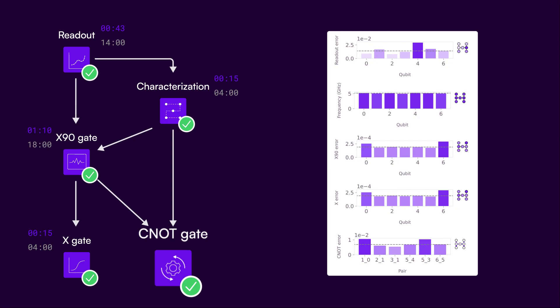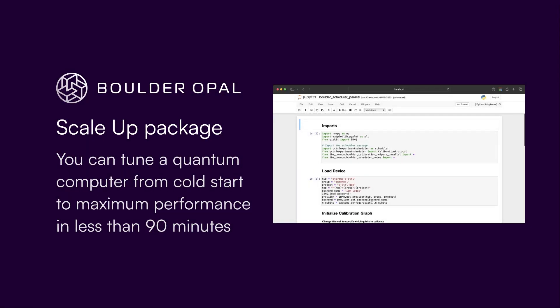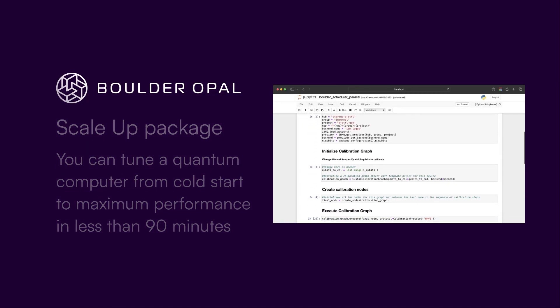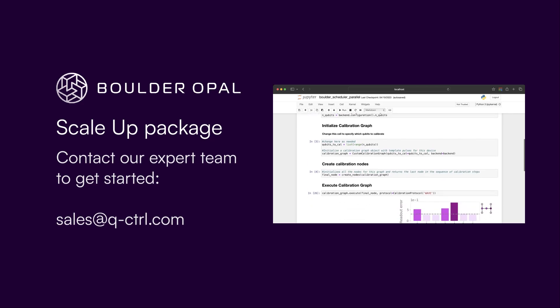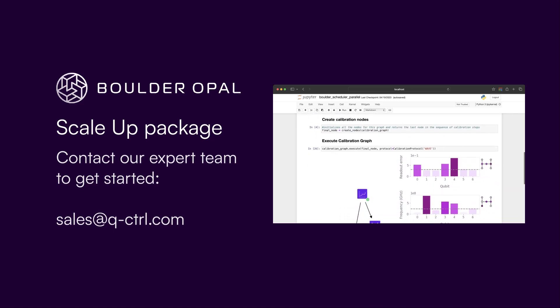In this demonstration, you've seen the QControl automated scheduler autonomously navigate all tasks in tuning up an IBM quantum computer from a cold start in under 90 minutes—only about 10 minutes without API latencies. If you're ready to save hours and automate your own system, contact us to explore how this technology can be deployed in your custom hardware today.